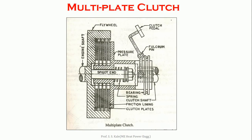Let's first look at the multi-plate clutch. In the figure of the multi-plate clutch, we will understand the construction first and then go for the working. We can see the engine shaft on one side, which is connected to the flywheel. The other shaft is the output shaft, which goes to the gearbox. So in the transmission system: first engine, then clutch, then gearbox, then the propeller shaft.